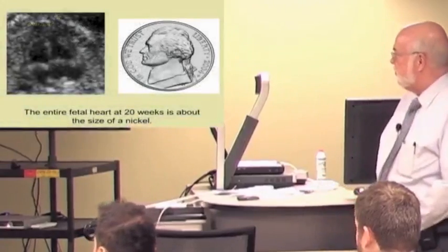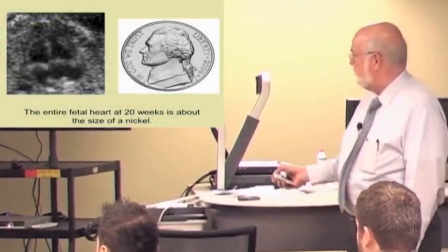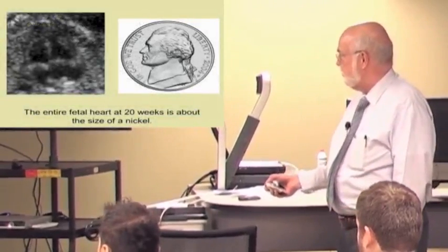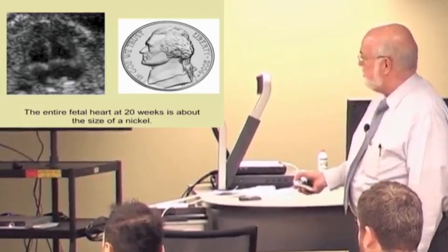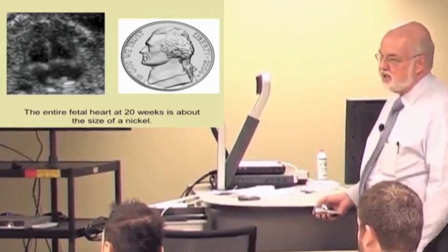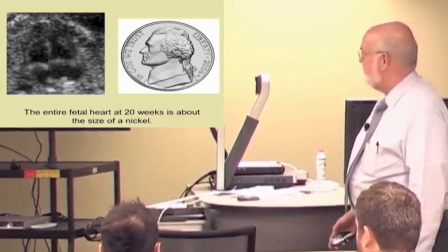Now in terms of resolution of current equipment, this is a picture of a fetal heart, the four chambers, two ventricular chambers, two atria here. And this is a nickel, and the heart is about the size of a nickel at 20 weeks. And 20 weeks is when we usually do the anatomic survey.